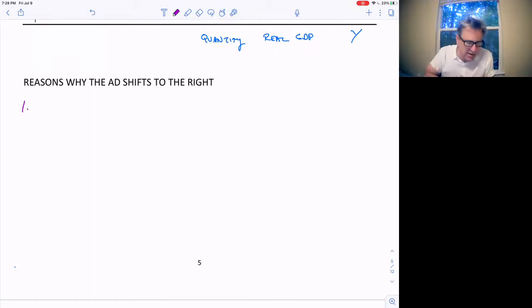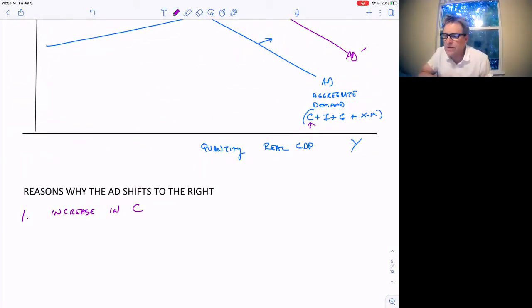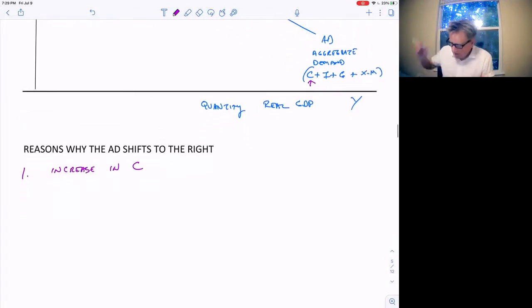So reasons why it shifts to the right? I'll give you one reason. You can probably figure out the rest. It's an increase in consumption. Increase in C will increase aggregate demand. And it increases the C plus I plus G plus X minus M. And that moves the aggregate demand curve to the right. What would increase C? Well, taxes falling would increase consumption. Confidence, people's confidence would increase their spending.